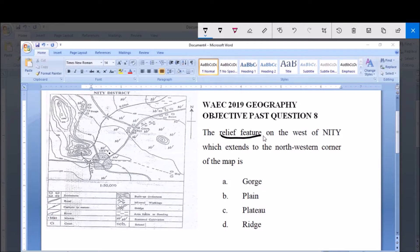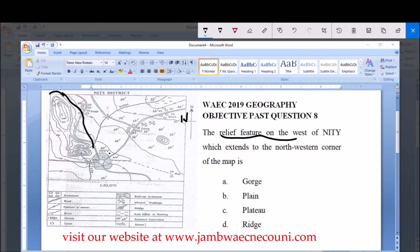the relief feature on the west. So this is the relief feature. This is north, this is south, this is east, so this way is west. West of Niti, which is this way, you have this relief feature here and this relief feature extends up to the north-western corner of the map.